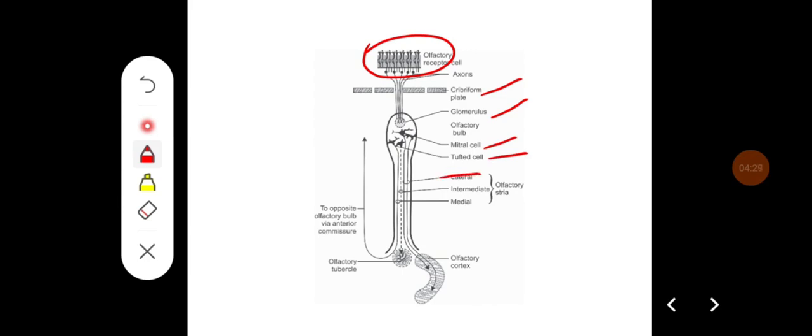It is going to lead to the three stria, lateral, intermediate and medial. Whereas lateral stria, they end in the ipsilateral olfactory cortex.